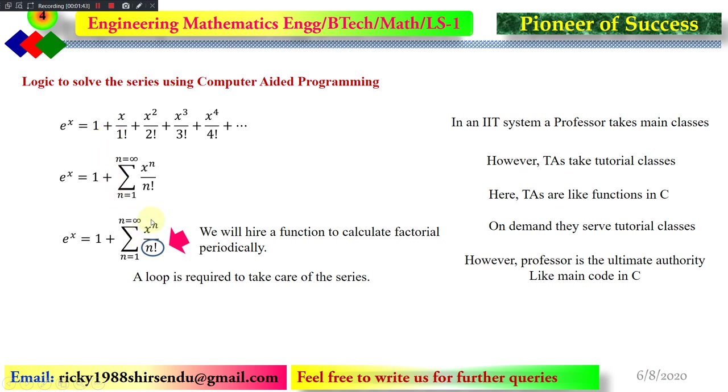There are two things to be thought about. We have to calculate x to the power n where n is varying, and also we have to calculate the factorial of n during the code. In this case, what we do? We hire a particular program in order to calculate factorial of n.